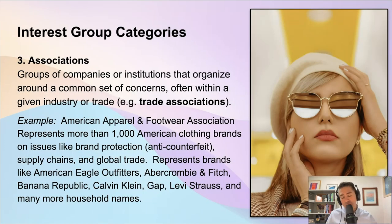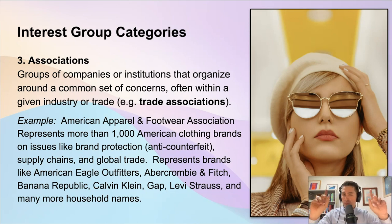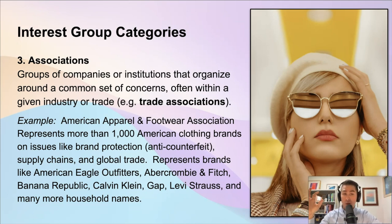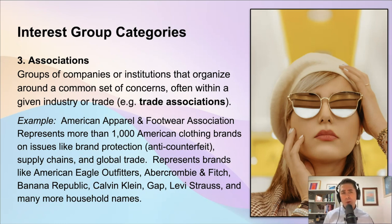Moving on, we looked at our first two categories. Now we're going to look at our third category: associations. Remember — first we had individuals coming together, then we had single entities like one company or one government agency representing itself to government. Here, we're going to have a collection of companies or a collection of agencies come together — and typically these are always going to be in the same industry or trade. One of the best examples of an association is something called a trade association.